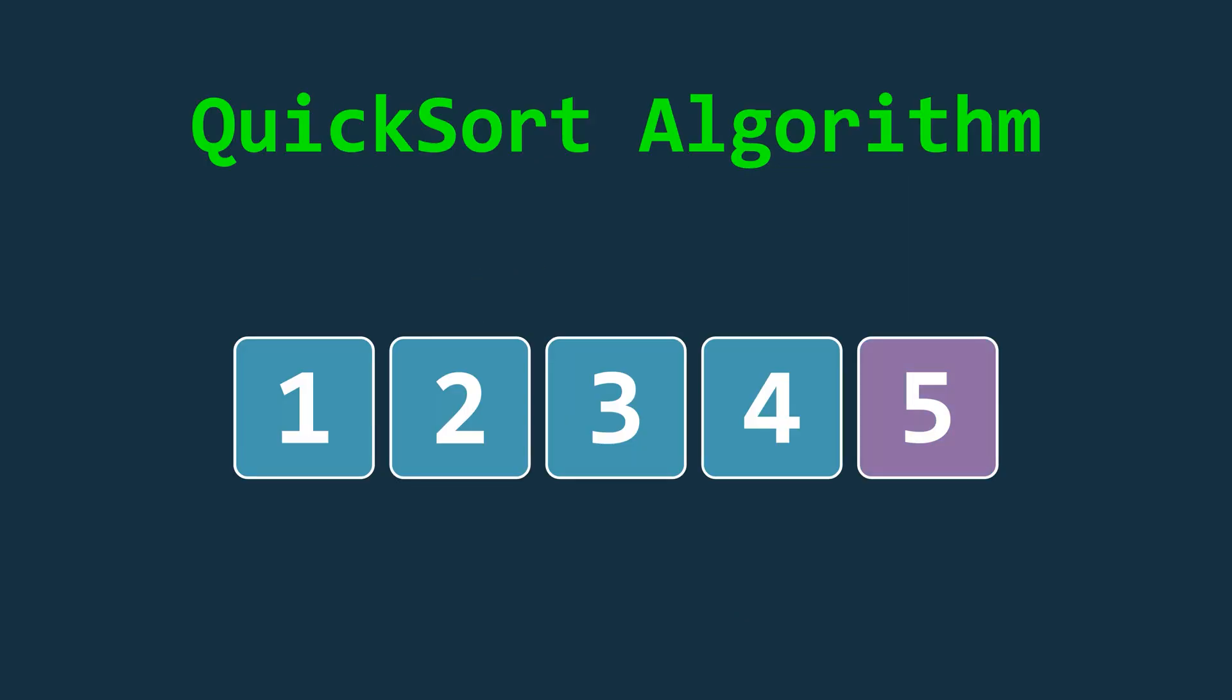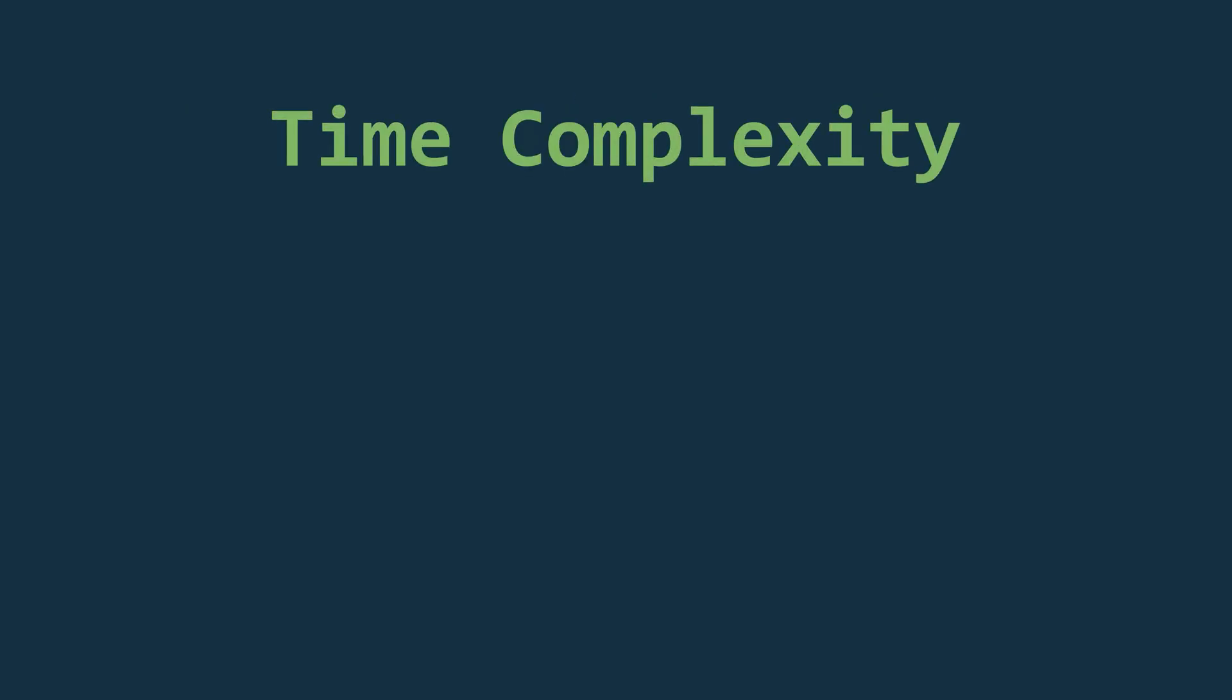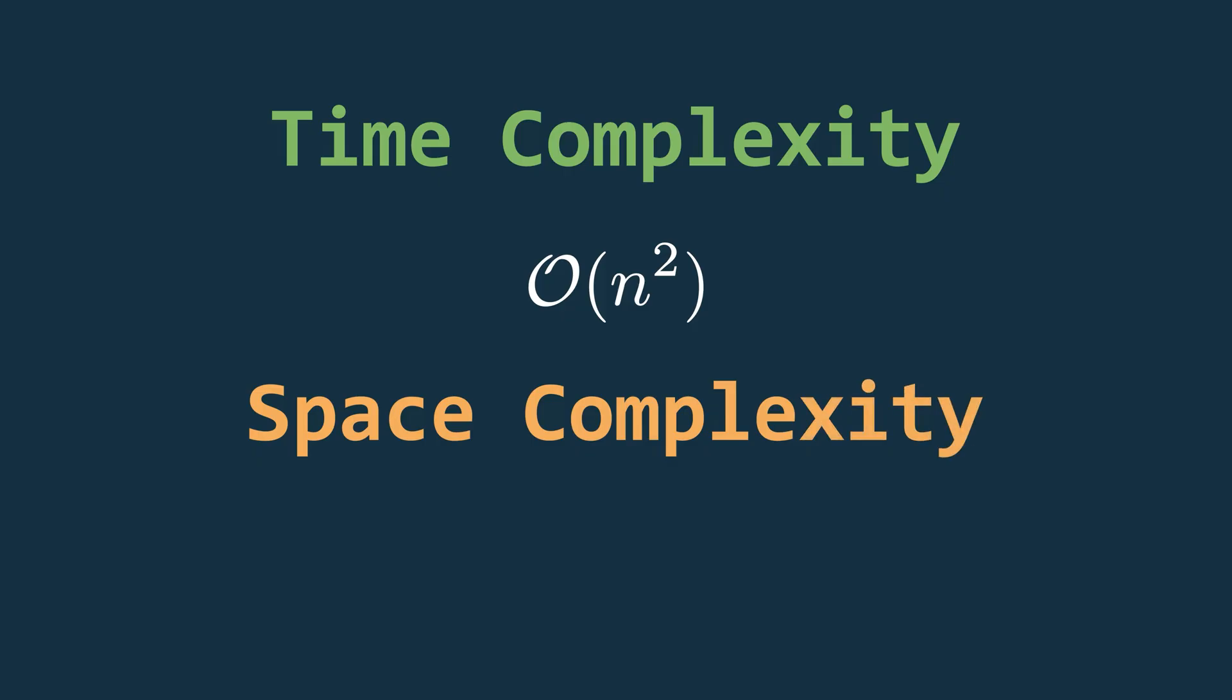Now, in the worst case, that is when the pivot is always either the largest or the smallest element, the array does not get divided into halves. Instead, it becomes completely one-sided after each partition. In this scenario, both the time and space complexity degrade significantly. The time complexity becomes O(n²) and the space complexity increases to O(n) due to the recursion stack growing linearly with the input size.